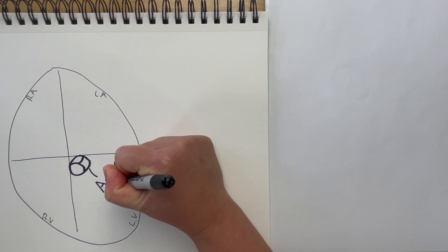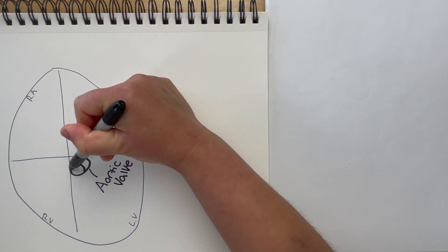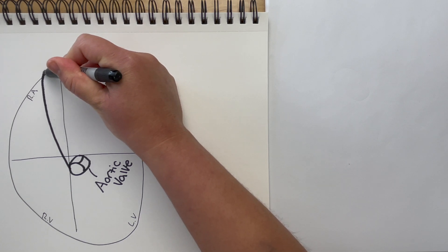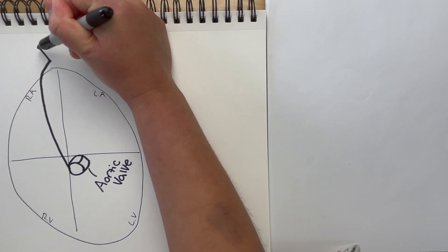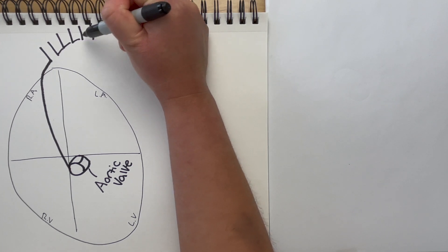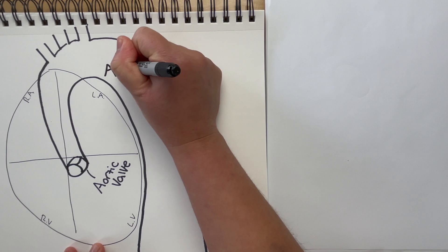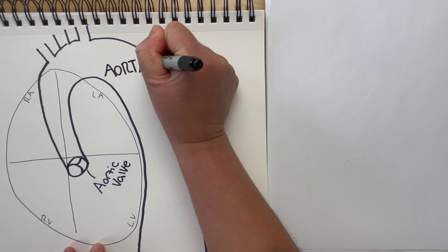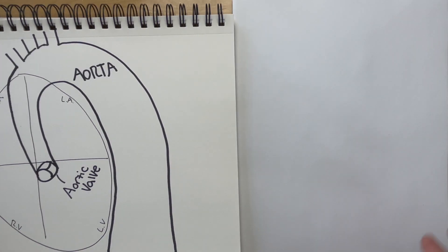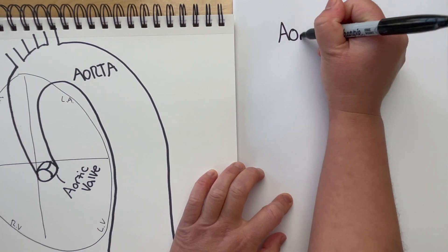Here I have a very general drawing of the heart. I have the right and left atria, I have the right and left ventricles, and I have the aortic valve coming right off of the left ventricle and going straight into the aorta. The aortic valve is super relevant to the coronary system because the right and left coronary arteries branch off of this aortic valve, and we're going to take a super close look at that here on the right hand side.